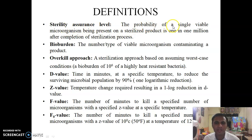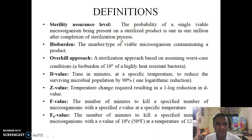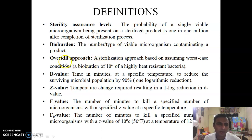Sterility Assurance Level (SAL): the probability of a single viable microorganism being present on a sterilized product is one in one million after completion of the sterilization process. Bioburden: the number or type of viable microorganisms contaminating a product. Overkill approach: a sterilization approach based on assuming worst-case conditions.